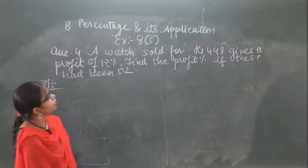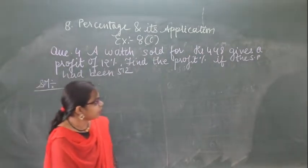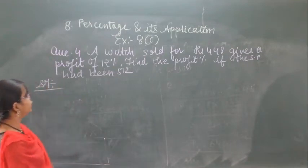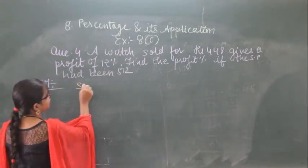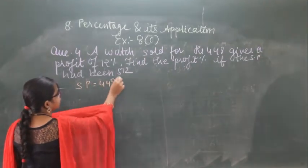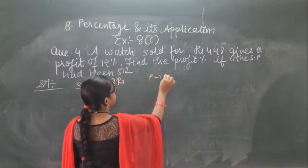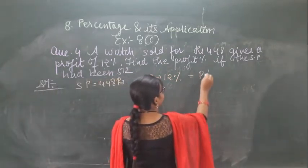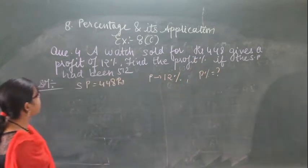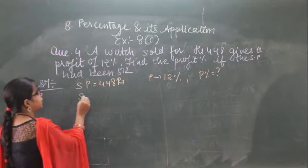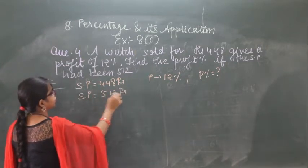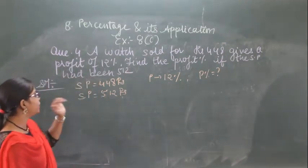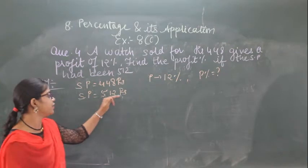In the next question, a box sold for rupees 448 gives a profit of 12%. So the selling price of the box is 448 rupees and with this he is getting a profit of 12%. We have to find out the profit percent if the selling price is changed to 512 rupees. Here selling price is given as 512 rupees.